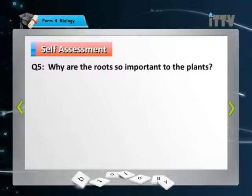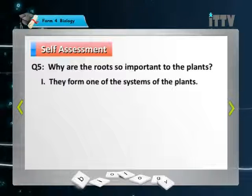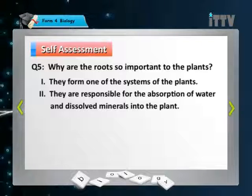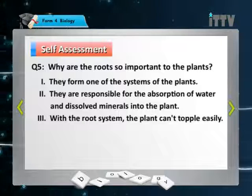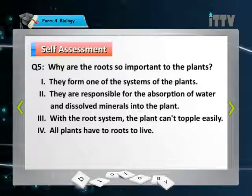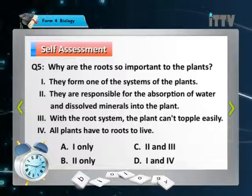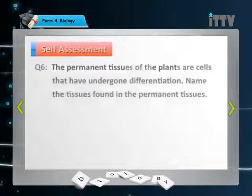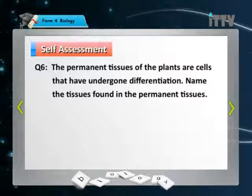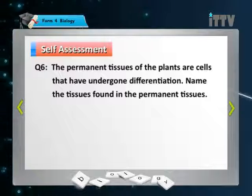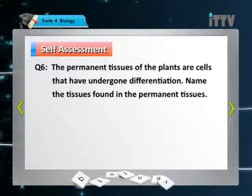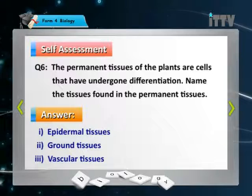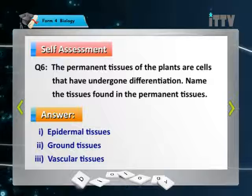Question 5: Why are roots important to plants? 1. They form one of the systems. 2. They absorb water and dissolved minerals. 3. With the root system, plants can't topple easily. 4. All plants have roots to live. The answer is C — 2 and 3. Question 6: Name the tissues found in permanent tissues. Answer: 1. Epidermal tissue. 2. Ground tissue. 3. Vascular tissue.